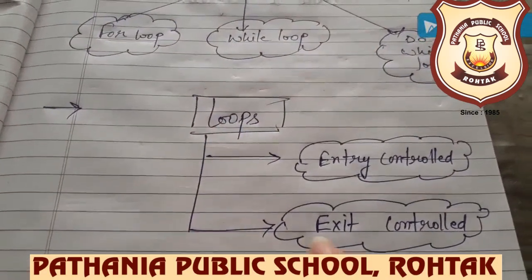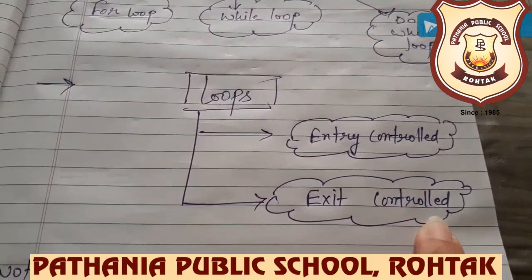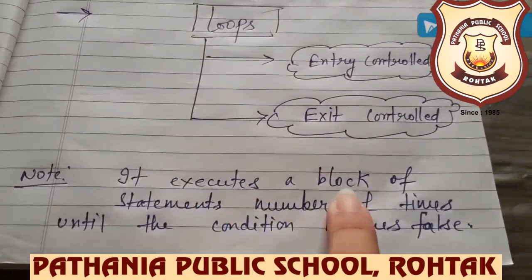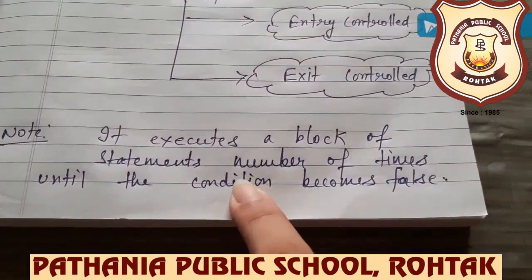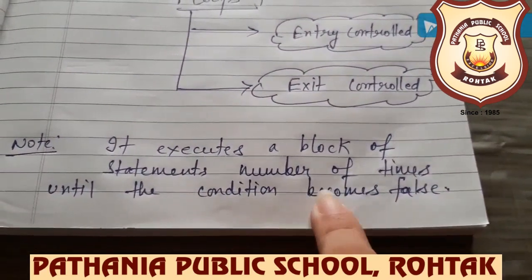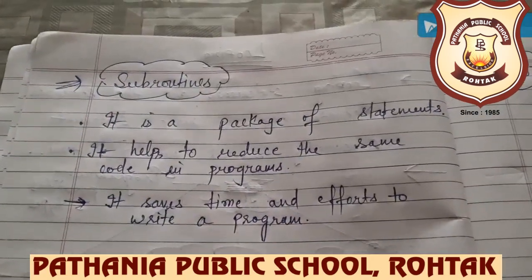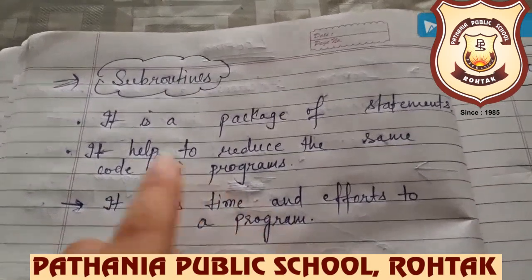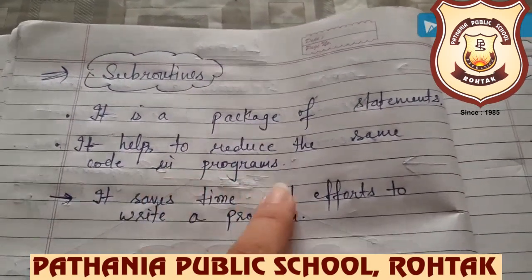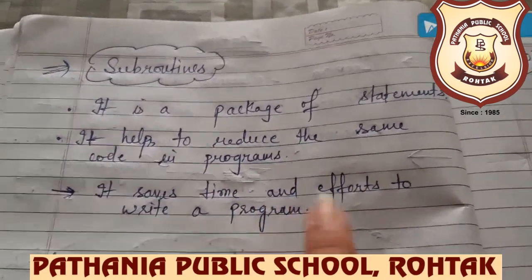Loops are divided into two categories: entry control and exit control. It executes the block of statements a number of times until the condition becomes false. The last one is subroutines. Subroutines are a package of statements and they help to reduce the same code in a program, which saves our time and efforts in writing the program.